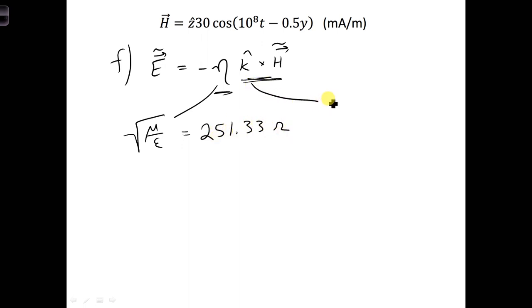K-hat is the direction of propagation, which we determined was the y-hat direction. And for h, we're going to need to write our time domain expression here in the phasor domain. So this would be z-hat, the direction is the same in either domain. The amplitude also doesn't change, so we'll have 30.